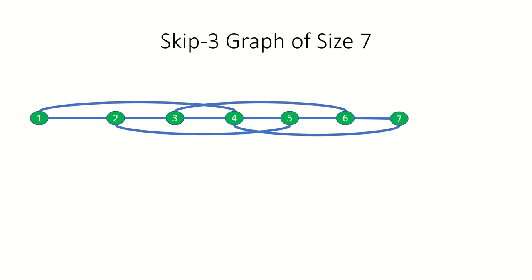Next consider the skip 3 graph of size 7. Skipping 3 from 1 we can get to the fourth vertex in one step and then skipping 3 again we can get to the seventh vertex in just two steps. What do these numbers 1, 4, and 7 have in common?